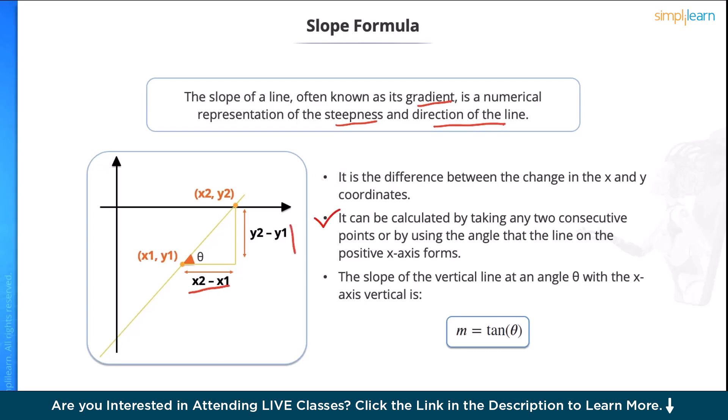It can be calculated by taking any two consecutive points, or by using the angle that lying on the positive x-axis forms. The slope of a vertical line on an angle theta with x-axis is m equals to tan theta.